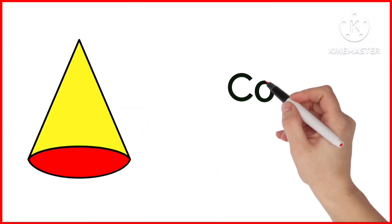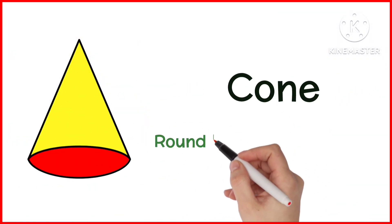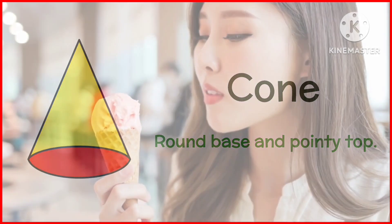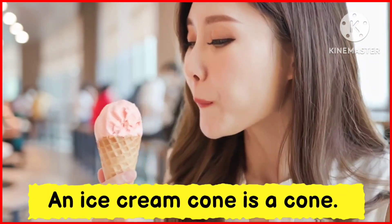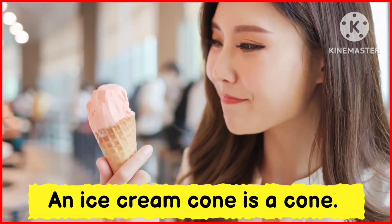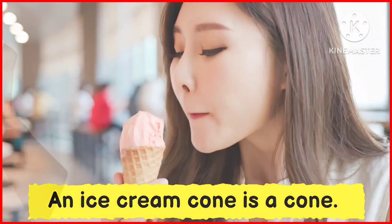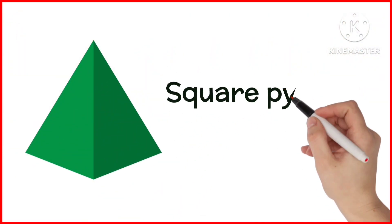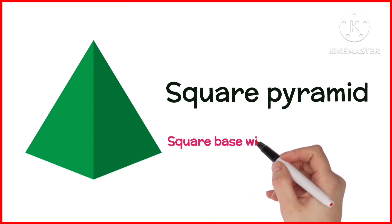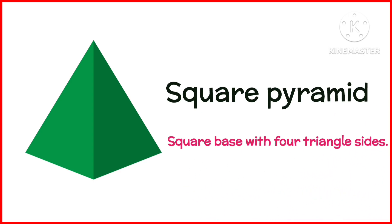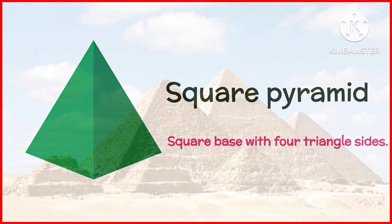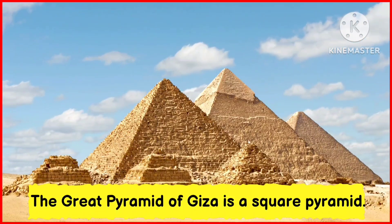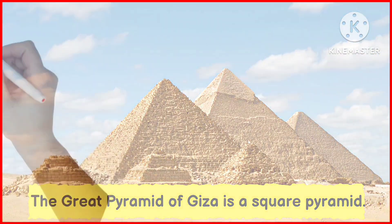Cone. Cone has a round base and pointy top. An ice cream cone is shaped like a cone. Square Pyramid. Square base with four triangle sides. The Great Pyramid of Giza is a square pyramid.